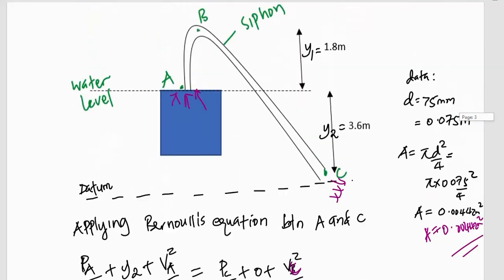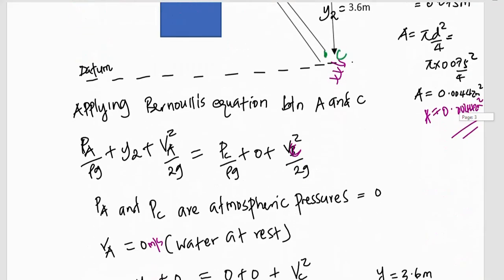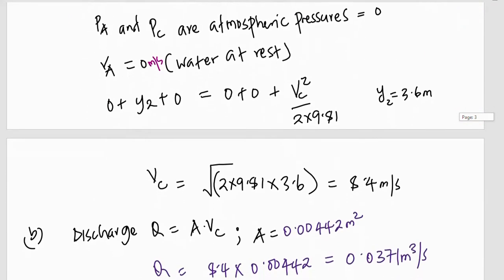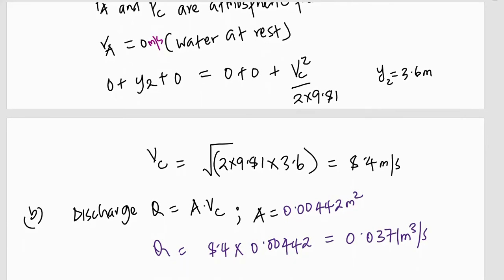Of course, when you look at it, this is 3.6 meters. Therefore, y_2 is 3.6 meters. Meaning that substituting all these values would give me V_C equivalent to the square root of 2 times 9.81 times 3.6, which gives us 8.4 meters per second. So, the velocity of flow, velocity of flow, will equal to that.